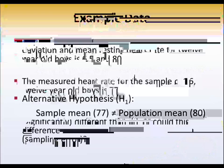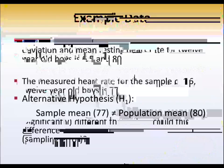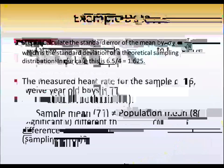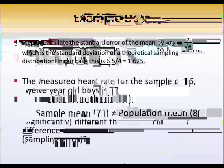So our x is 77 minus the mean, 80, divided by the standard deviation, in our case the standard error of the mean, 1.625. So the 77 represents a z-score of negative 1.845.